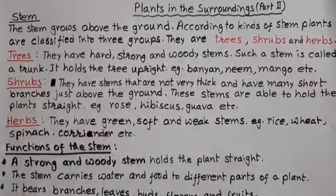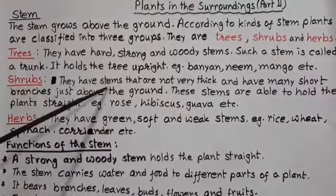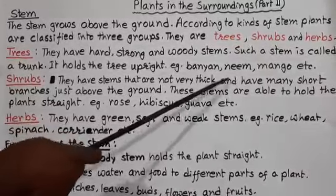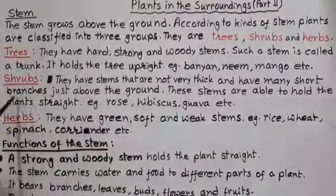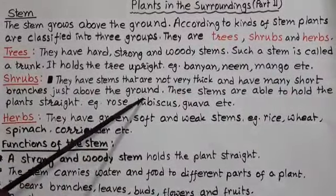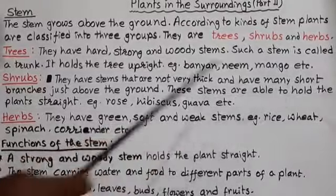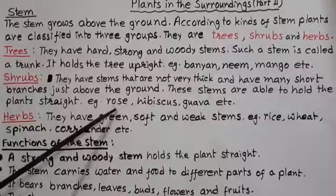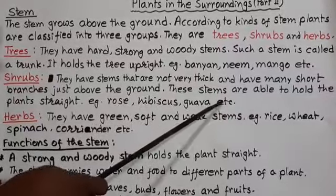Our second type is shrubs. They have stems that are not very thick and they have many short branches just above the ground. These stems are able to hold the plant straight. Examples are rose, hibiscus, guava, etc.